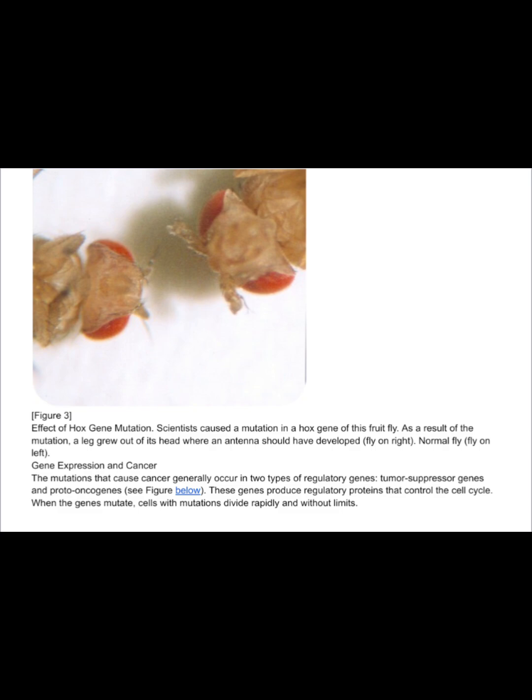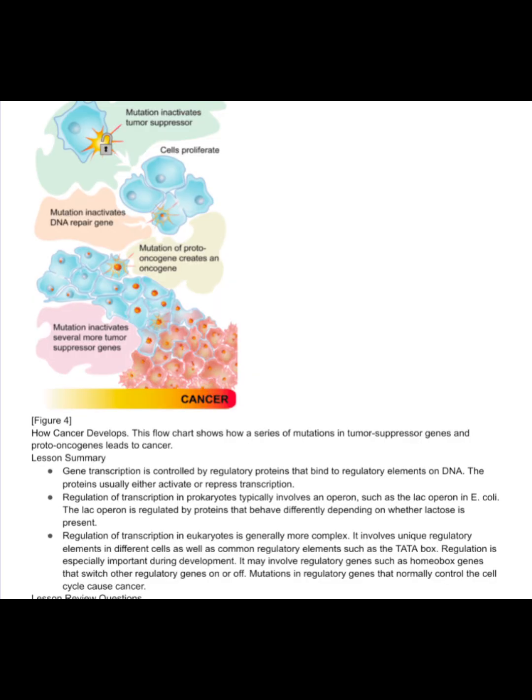Gene expression and cancer: the mutations that cause cancer generally occur in two types of regulatory genes — tumor suppressor genes and proto-oncogenes. These genes produce regulatory proteins that control the cell cycle. When the genes mutate, cells with mutations divide rapidly and without limits. This flow chart shows how a series of mutations in tumor suppressor genes and proto-oncogenes leads to cancer.